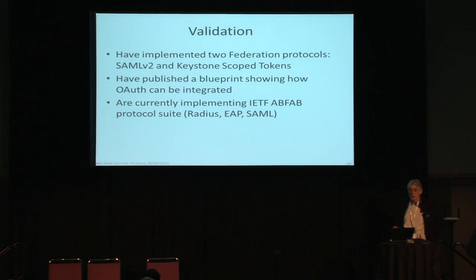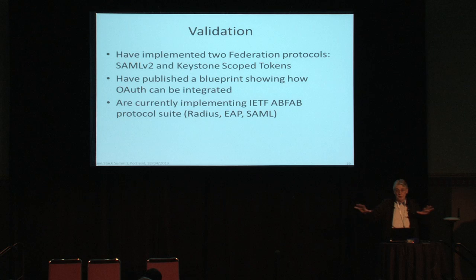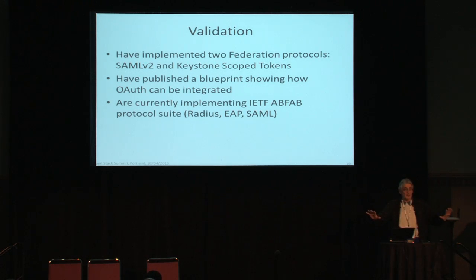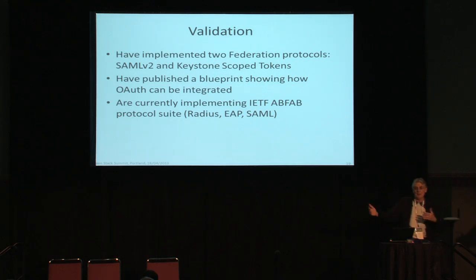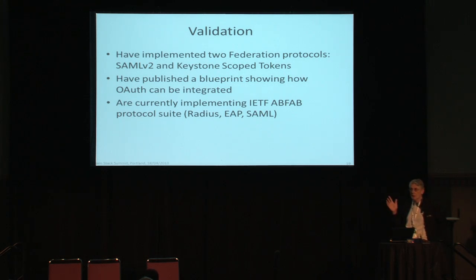In terms of validation, this has been implemented with two protocols: SAML v2 and Keystone-to-Keystone. With Keystone-to-Keystone, you can set up two Keystone instances and use one as an IDP to authenticate users to the second, enabling a user to access multiple Keystones by logging into one central one. The IT-ABFAB protocol suite, based on RADIUS, EAP, and SAML, is currently being implemented.